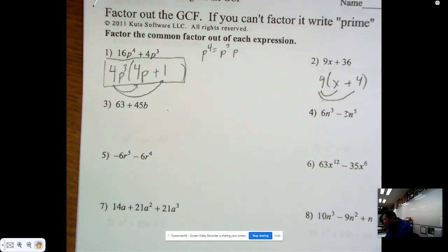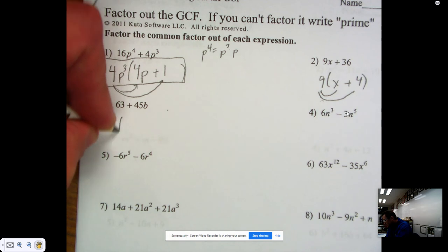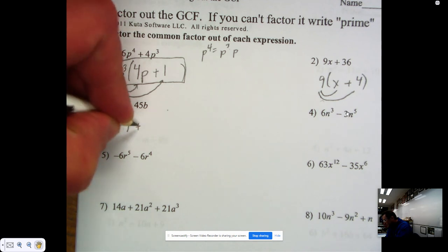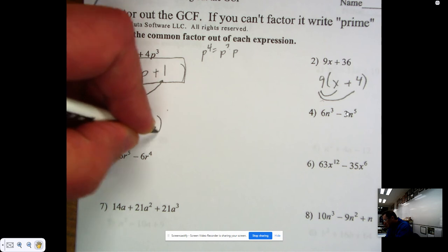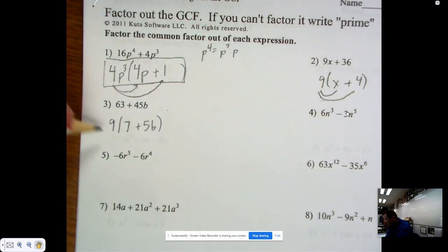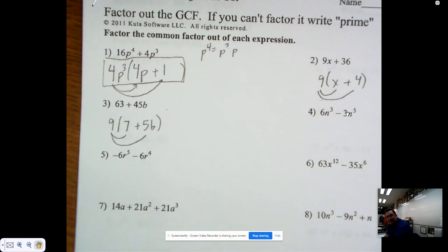Let's do a couple more. 63 plus 45b. It turns out that 9 is the common factor here. 9 times 7 is 63, and 9 times 5 is 45. Again, we could multiply this out to see that it is, in fact, correct.